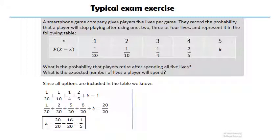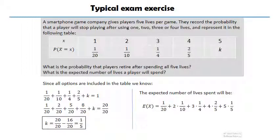Now for the second question, what is expected number of lives a player will spend? I just filled up the table. I know that here I have one-fifth. So, all I have to do is 1/20 times one, 1/10 times two, 1/4 times three, 2/5 times four, and my new calculated value, one-fifth times five, add it all up together, and I get my expectation of 3.6.